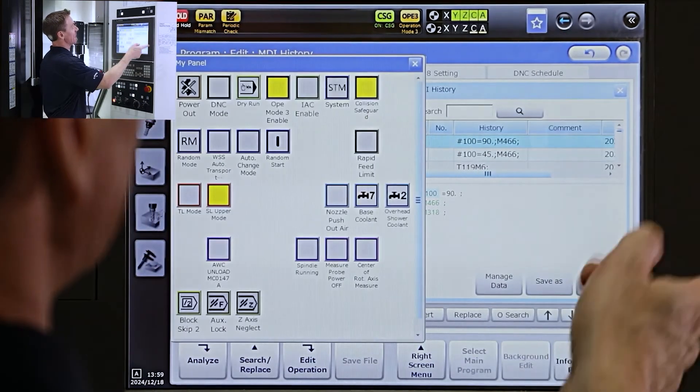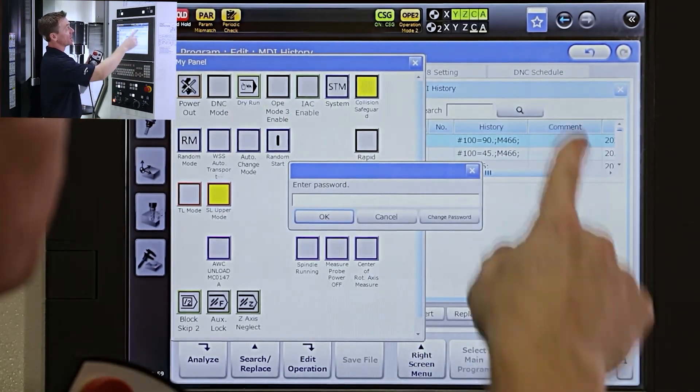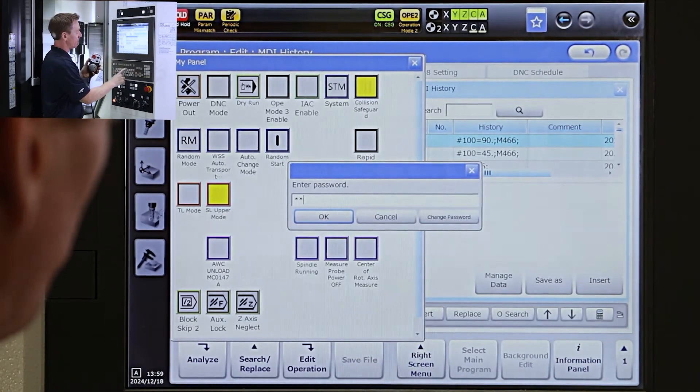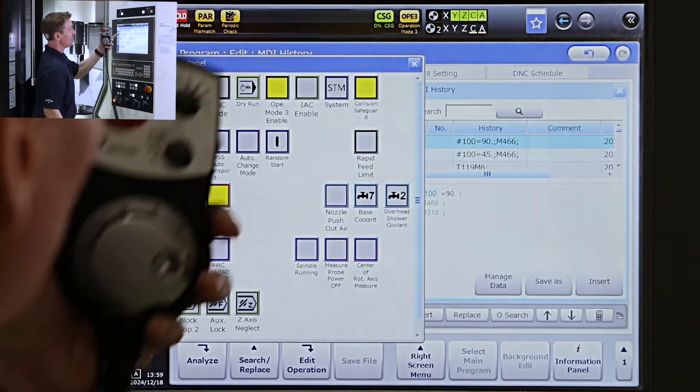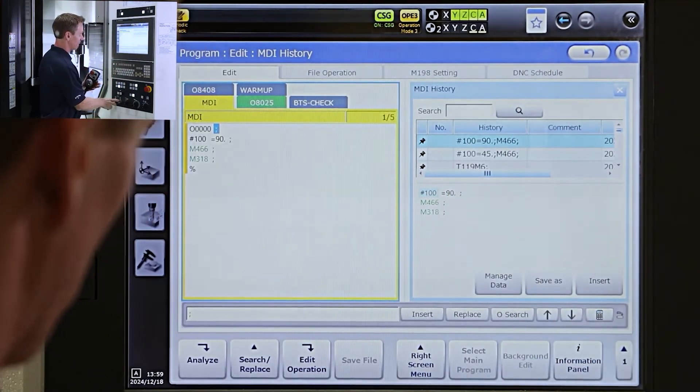So we have our operation mode three on here. If you're not familiar, we turn on operation mode three by going to our my panel, entering our pro password, PRO. We light that up as yellow. Now with the door open, I should be able to do the spindle orientation.